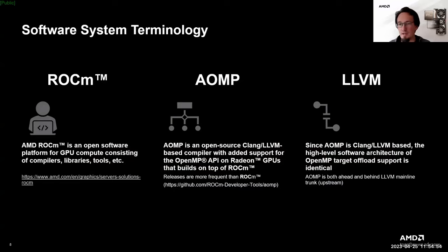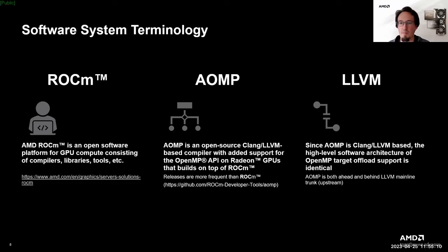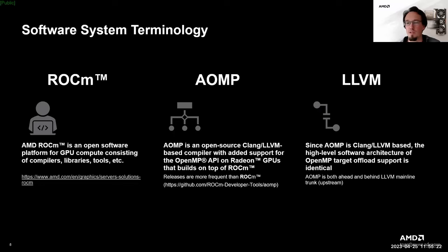AOMP is an open source compiler and runtime for OpenMP target offload. It is updated much more frequently, as we mirror the source code to GitHub typically multiple times a day. I think of AOMP as a preview version of what may trickle down into the OpenMP compiler as part of the ROCm software stack.